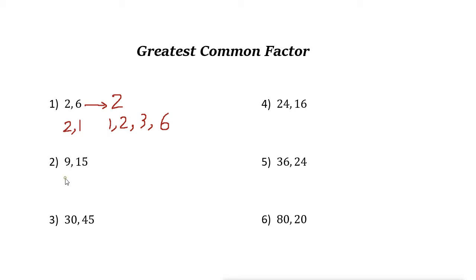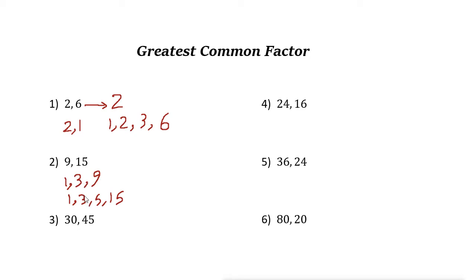The factors of 9 are 1, 3, and 9. The factors of 15 are 1, 3, 5, and 15. The biggest common factor of these two is 3, so the GCF of 9 and 15 is 3.